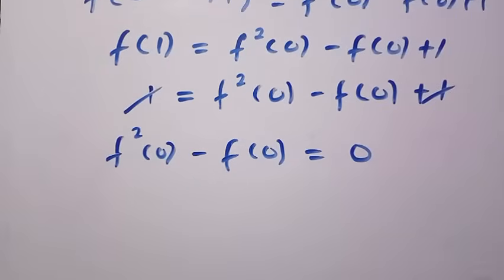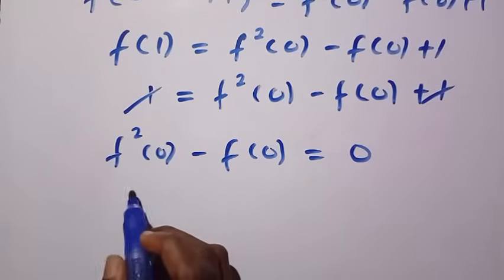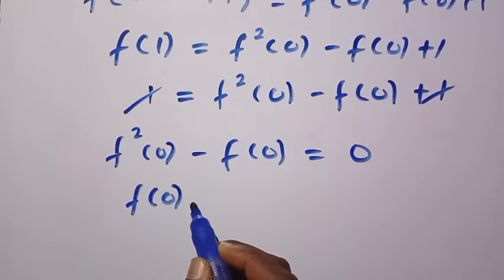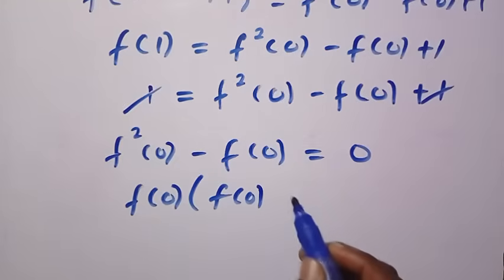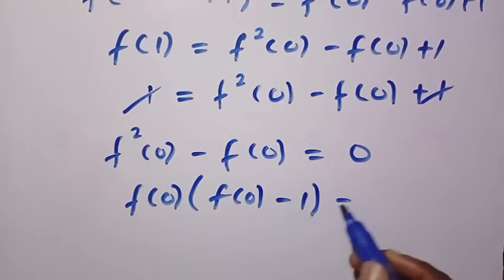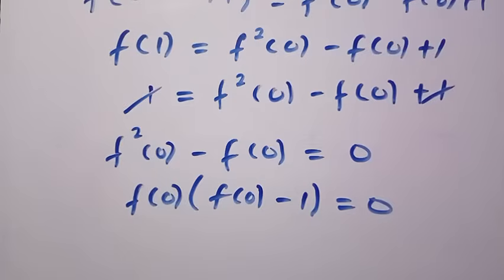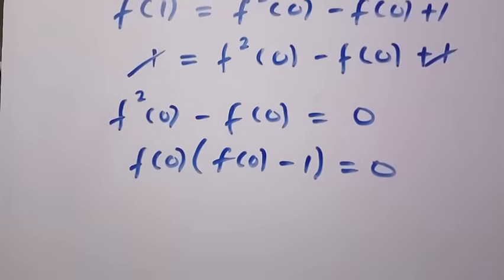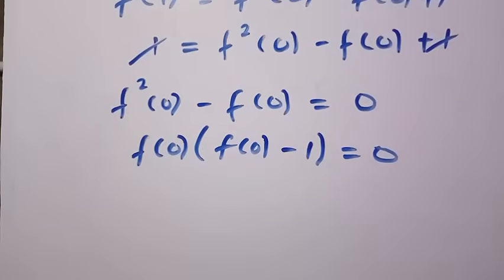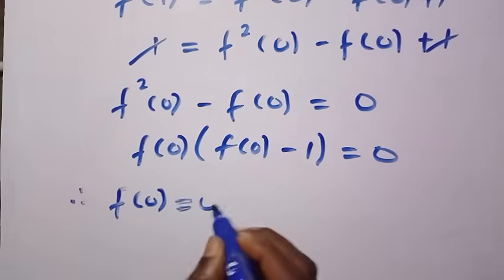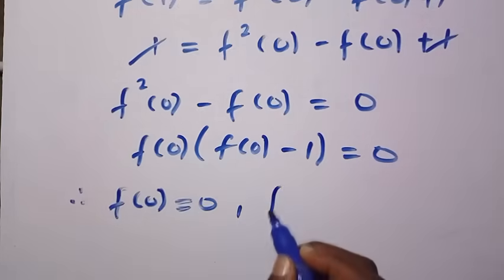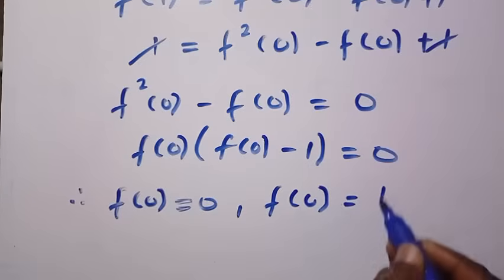And from this, if you have f squared of 0, suppose I factor out f of 0. So in this bracket we are going to have f of 0 minus 1 equals 0. By the quadratic rule, if you have a times b equals 0, it shows that a equals 0 and b equals 0. So if I let f of 0 equals 0, which means we are still going to have f of 0 equals 1.